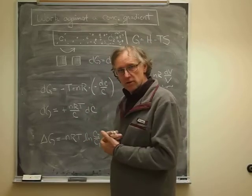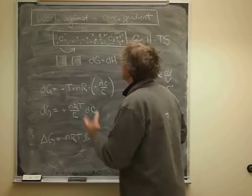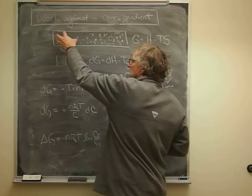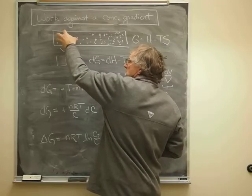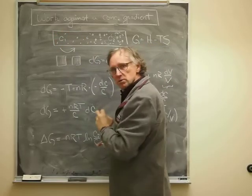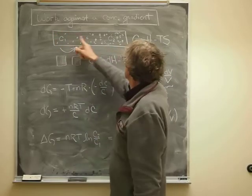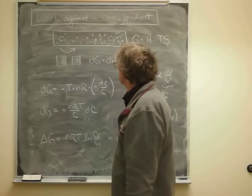And the way we're going to do this is to calculate the Gibbs energy change associated with taking those molecules and compressing a given number of molecules into a smaller and smaller space until we get up to that new concentration.